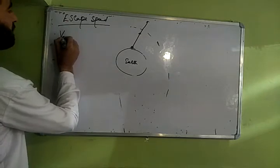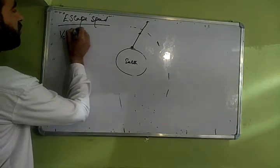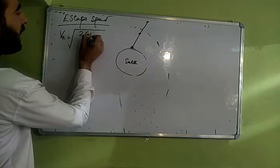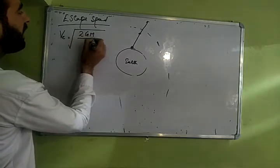And the escape speed, if you look at basic formula, it is equal to square root of twice gm divided by r.